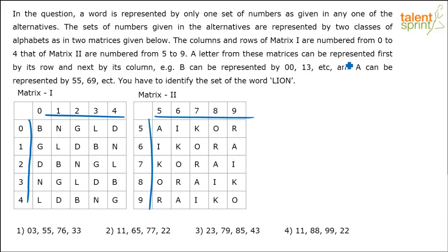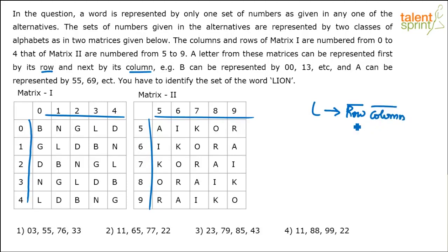A letter from these matrices can be represented first by its row and next by its column. This is important — any letter you choose is represented first by the row number followed by the column number. And there can be multiple ways of representing a letter.